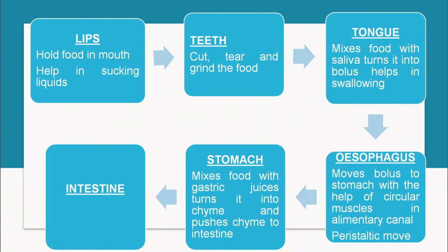The esophagus moves the bolus to the stomach with the help of circular muscles in the alimentary canal. All parts of the alimentary canal, especially after the esophagus — including the esophagus, stomach, and intestine — undergo peristaltic movement due to circular muscles in the walls of these structures, and this helps in the mechanical digestion of food. This movement is known as peristaltic movement.